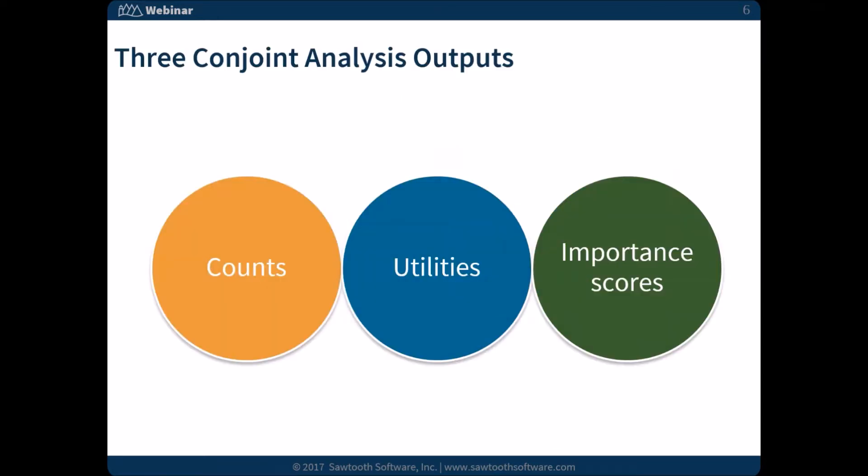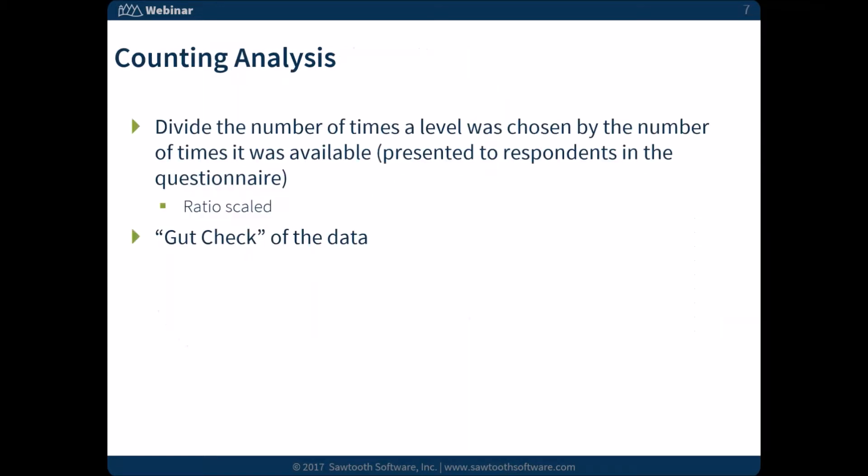With choice-based conjoint, we're going to be focusing primarily on three types of outputs: counts analysis of the data, modeling the data to produce what we call utility scores, and attribute level importance. We're going to go through these three outputs today.